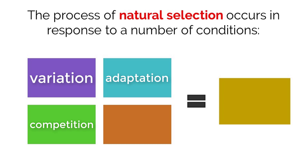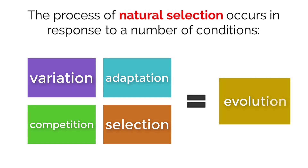Finally, some organisms will be naturally selected for based on their adaptations, meaning they will have a better chance at survival in their environment. If you are able to survive and grow up to be an adult, that means you can reproduce and pass along your beneficial adaptations to your offspring. If all four of these components are met, then allele frequencies of the population will change, which means that evolution is taking place.